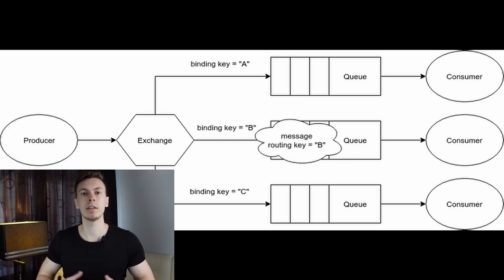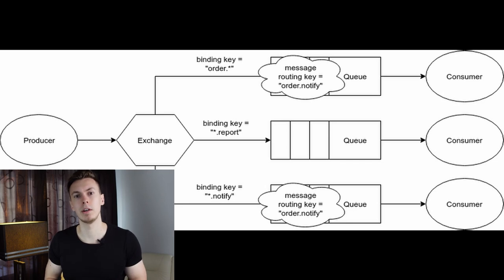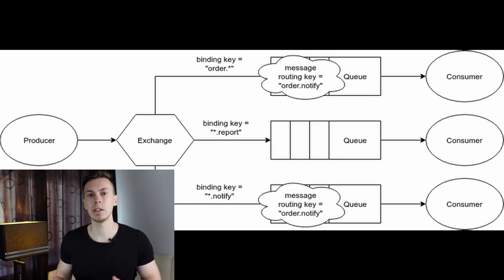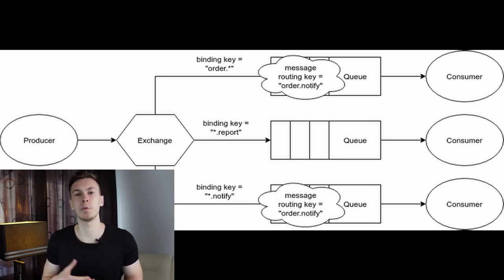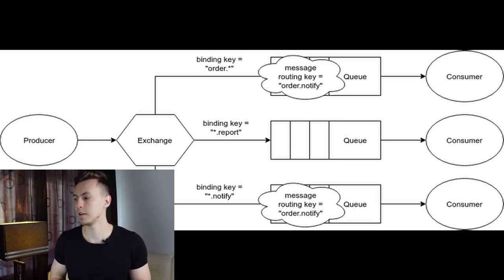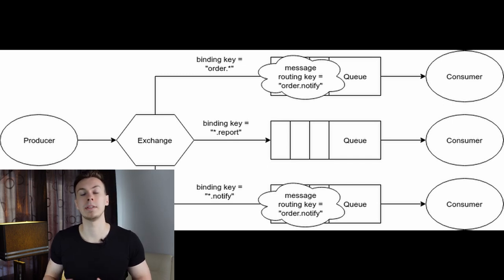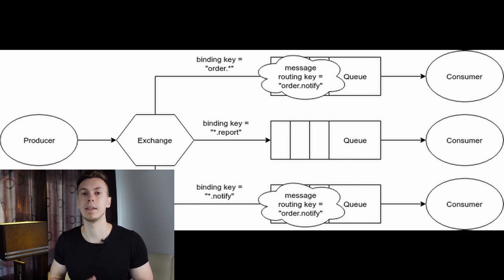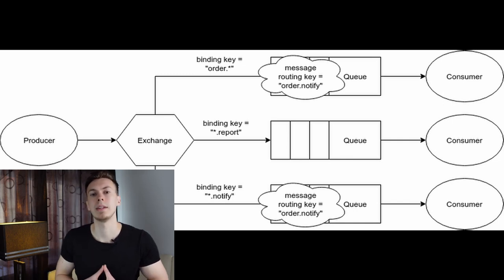Another exchange type is topic. A topic exchange sends messages to queues where the routing key partially matches the binding key. The syntax is similar to regular expressions. For example, binding key 'order.*' means a message goes to that queue if the routing key starts with 'order.'. The binding key '*.notify' means the routing key must end with '.notify'. In the example shown, only the first and last queues receive the message — the second queue doesn't because the keys didn't match.